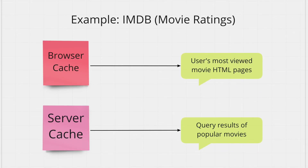We'll end the video by looking at a real-life example — IMDB, a website that reviews movies and TV shows. It's common for a user to look at the details about the same movie on a given day, maybe reading reviews multiple times to decide whether to watch it, or coming back for more information. In this case, you can stick the HTML page of these movies in the browser cache. Now every time the user visits your website for the same movie, you just retrieve the page from the browser cache.